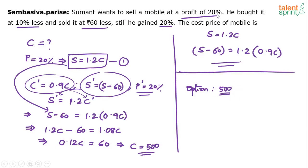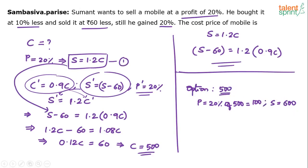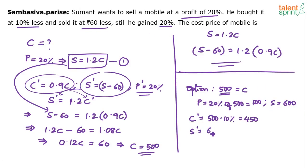Look at the first condition: the man wanted to sell at a profit of 20%. 20% of 500 is 100 rupees, which means the original selling price should be 600 rupees — 1.2 times of 500 is 600. He bought it for 10% less, so the new cost price is 500 minus 10%, which equals 450. He sold it for 60 less, so the new selling price S' is 600 minus 60, which equals 540.